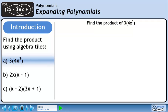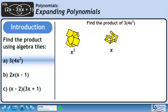Now that we've learned the rules of algebra tiles, we'll use them to find the product of 3 times 4x squared. From our virtual algebra tile kit, we'll make a source pile of large yellow squares, a source pile of yellow rectangles, and small yellow squares. Now we'll draw some lines to help us position the algebra tiles.